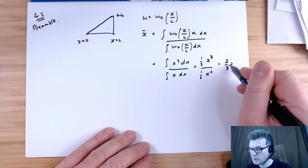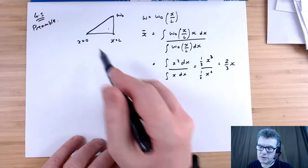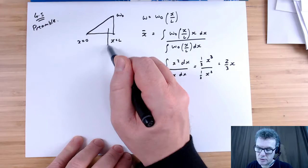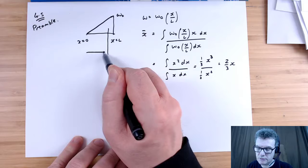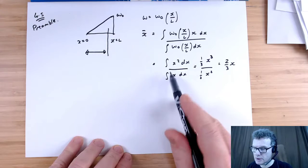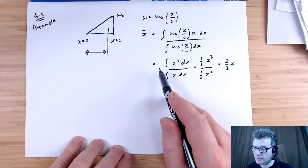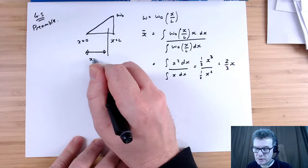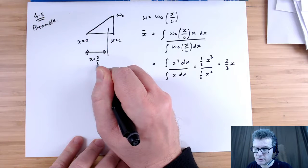That gives me 2 over 3 x. As I was expecting, the centroid is going to be, with my limits 0 to L, x equals 2 thirds L.